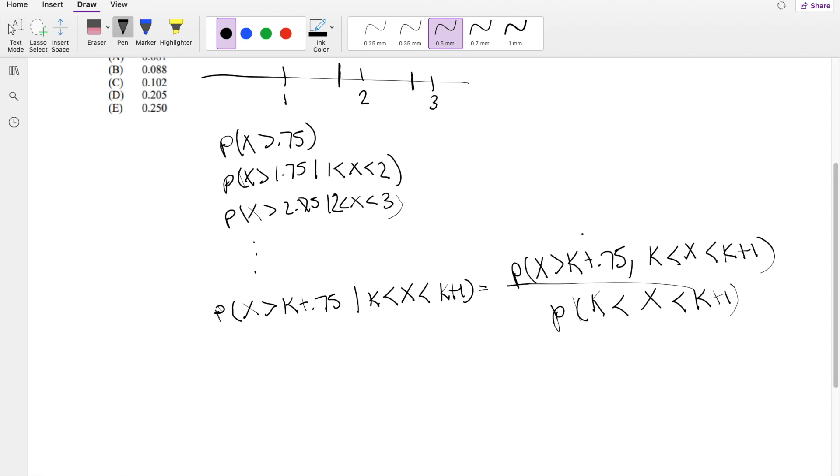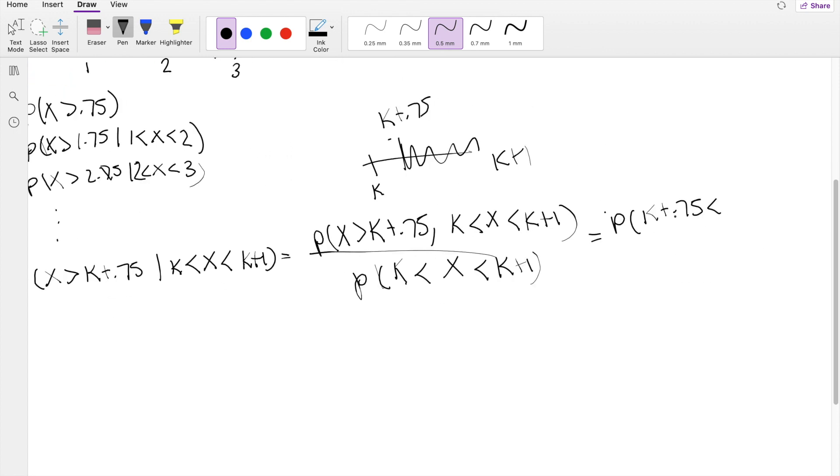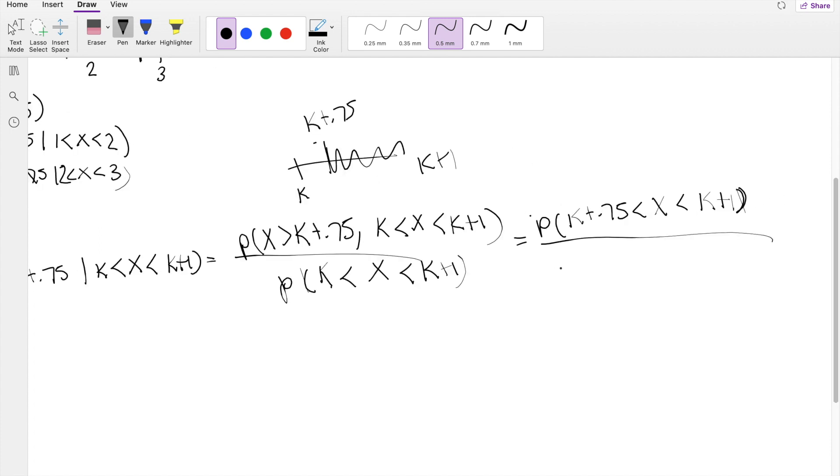The numerator, if x is greater than k plus 0.75, we know that's obviously bigger than k, and that's less than k plus 1. So we can simplify the numerator to just say probability that, then we can say x is between k plus 0.75 and some k plus 1. And the denominator just stays the same, probably that x is between k and k plus 1.